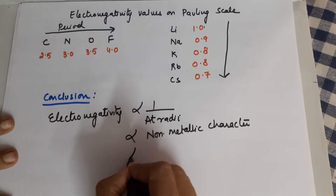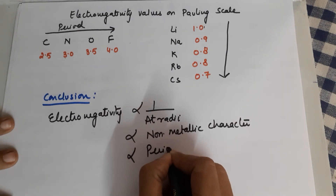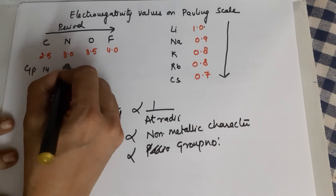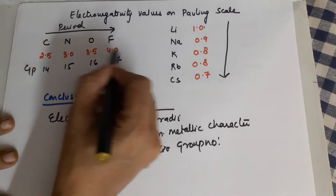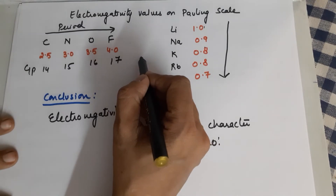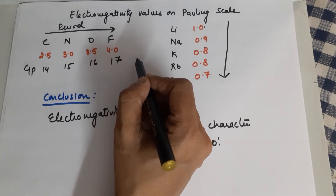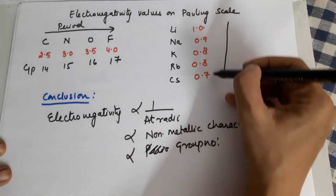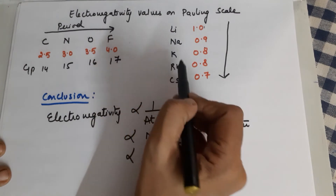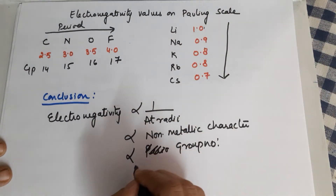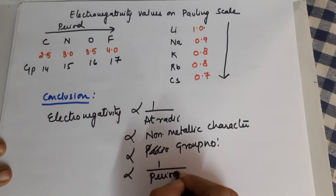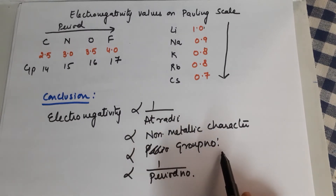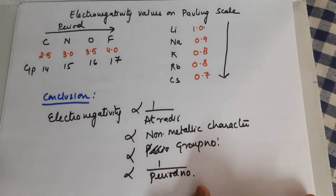Electronegativity is also directly proportional to group number — groups 14, 15, 16, and 17 show increasing electronegativity (group 18, noble gases, are excluded). As the group number increases, electronegativity increases. As you move down, the period number increases and electronegativity decreases. So electronegativity is directly proportional to non-metallic character and group number, while inversely proportional to atomic radii and period number.